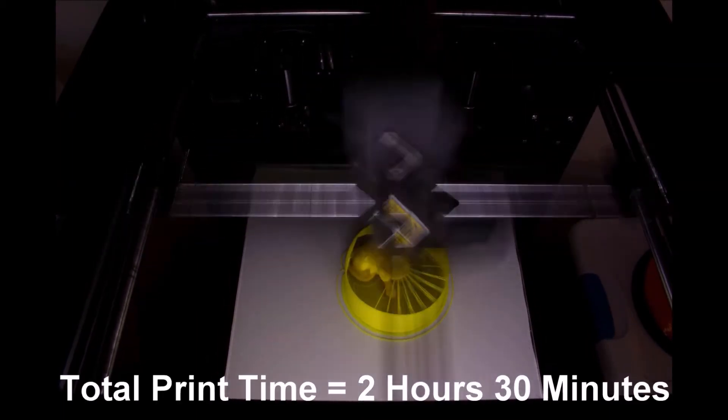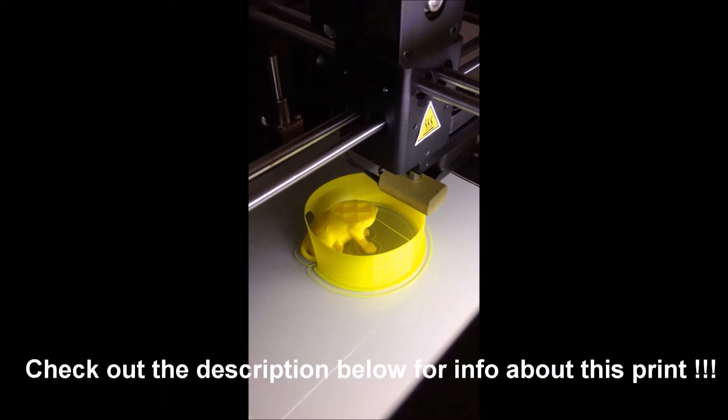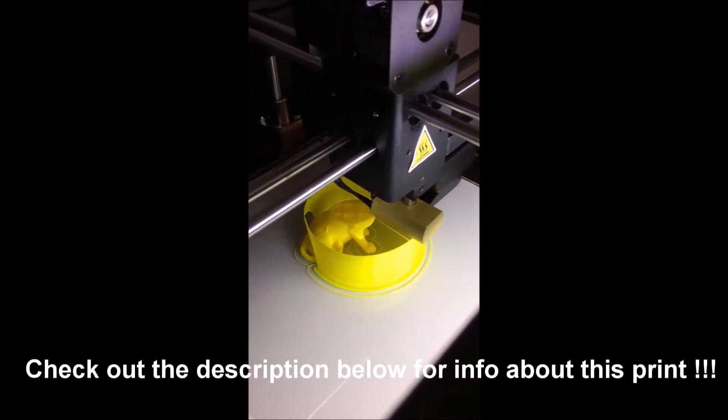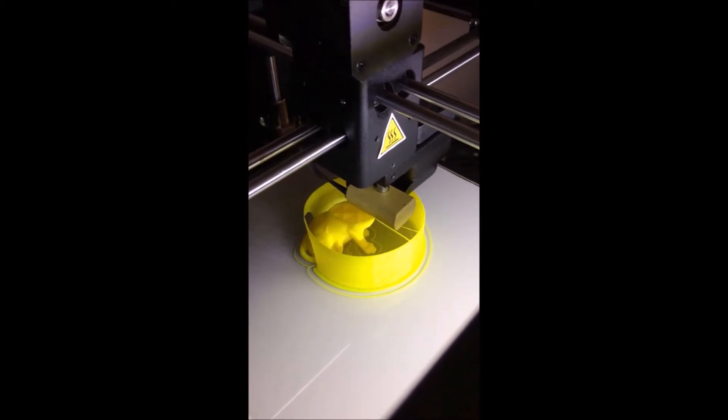This print took a total of 2 hours and 30 minutes to complete. In here you can see the first layer where the printer begins to bridge between the lion and the supports to create the hair.